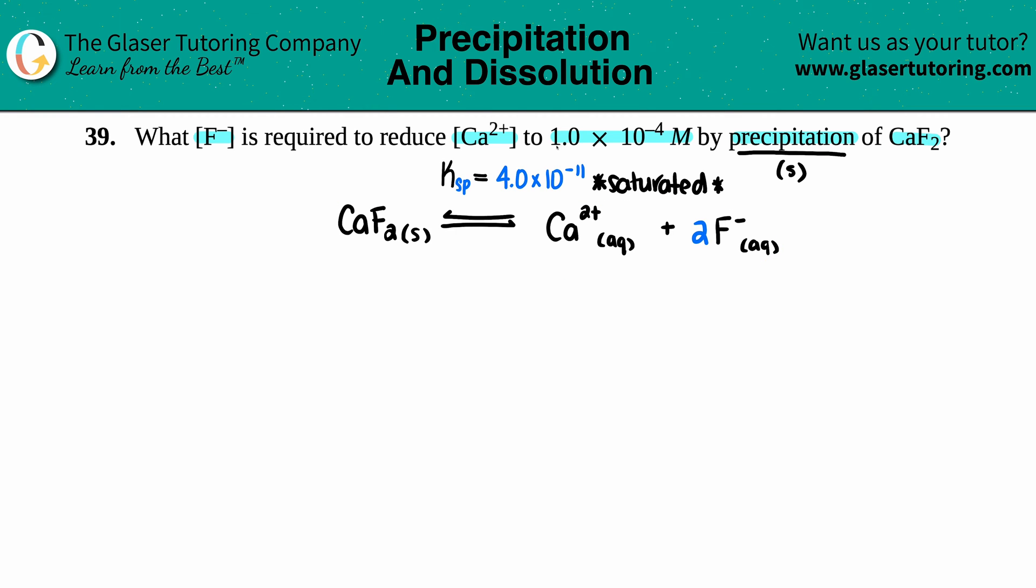Let's put down what they gave us. They told us that the calcium ion concentration is going to be 1.0 × 10^-4 M, so the Ca2+ is 1.0 × 10^-4 M. Then we want to find out what the F- concentration is, so I come over to the F- and I say, okay, that's what I want to find out. I'm going to label it as x.